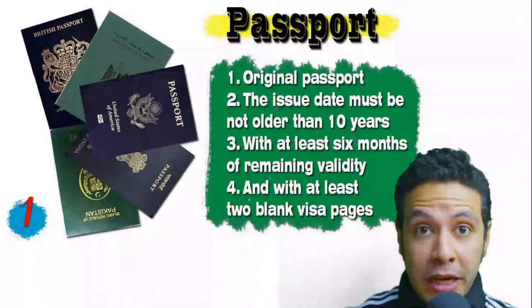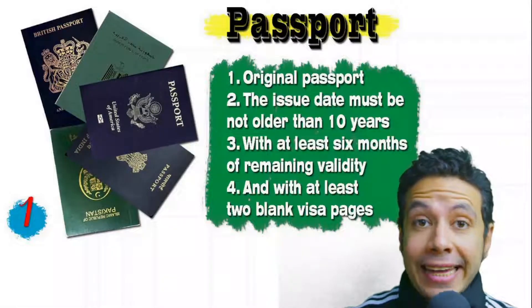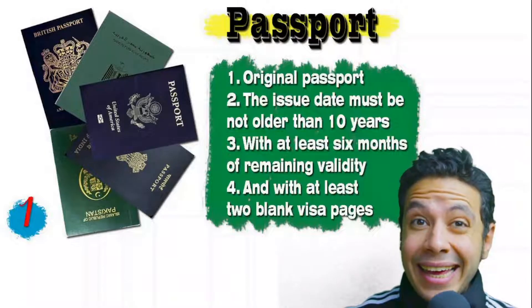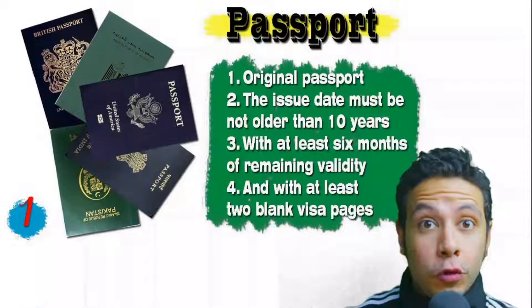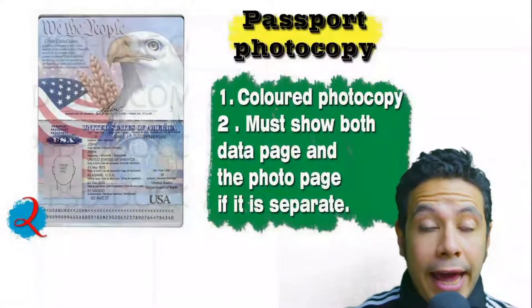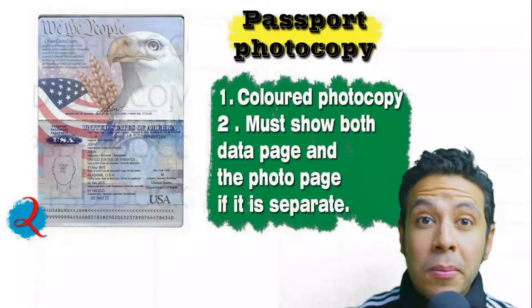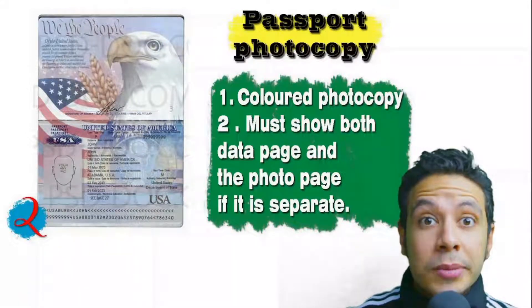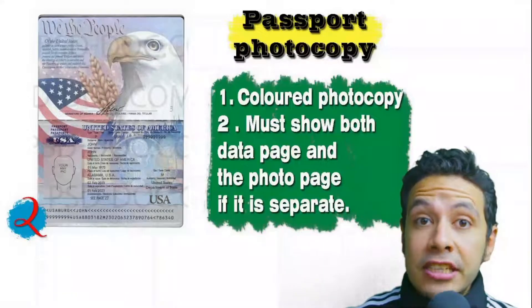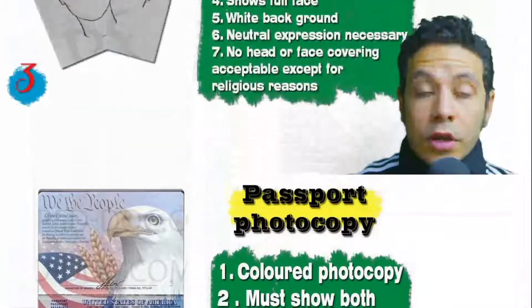What are the required documents you will need while applying for any visa? Speaking about your passport: your passport must be original, not older than 10 years, with at least six months of remaining validity and at least two blank visa pages for stamps. In many cases you will also need a passport photocopy — it might be one copy or more, preferred to be colored, showing both the data page and photo page.